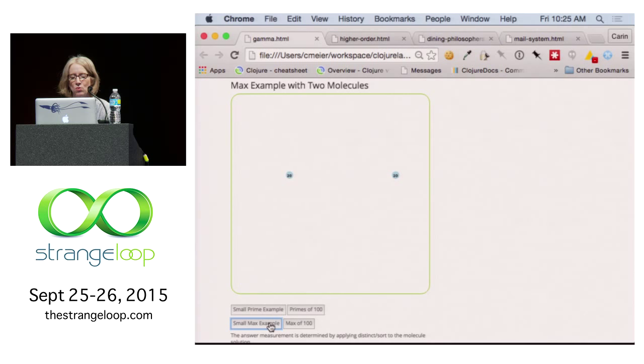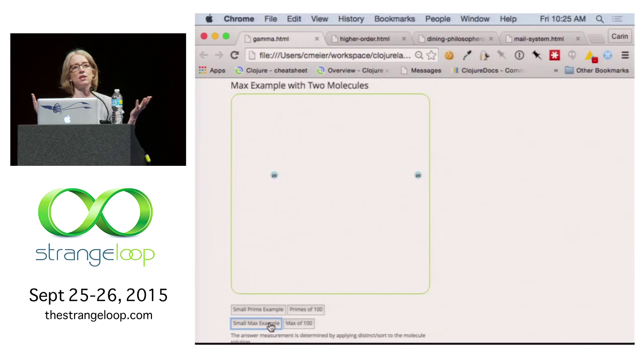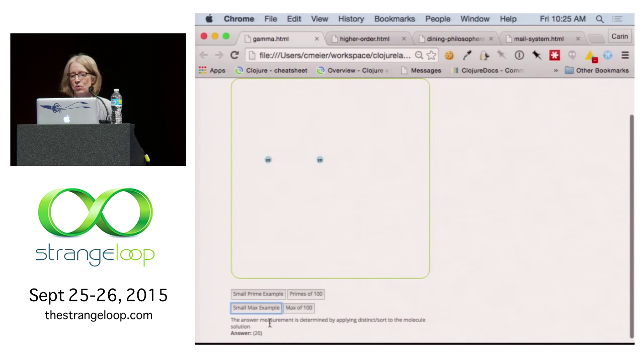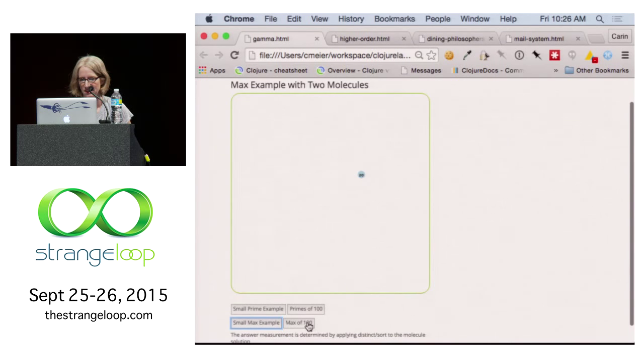What we're doing in code, this is sort of a visual representation. The point of having them in XY coordinates is just to help visualization and also to let you know that nothing's happening in a particular order. We have two molecules, a two and a twenty. They both bump into each other and they turn into a twenty. That's really cool. So that's what we saw. But let's do more. Let's calculate the max of a hundred using this.